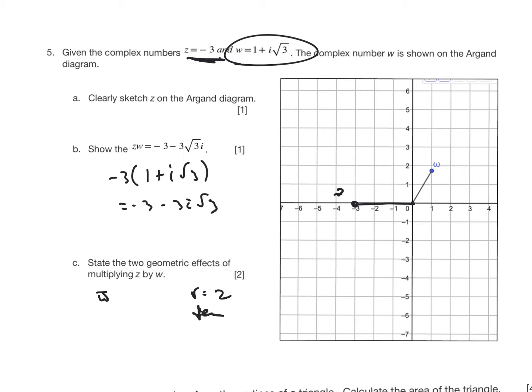And the theta, tangent theta, is root 3 over 1, and so theta is pi by 3, which we know is 60 degrees. And so this is 2 cis pi by 3. If I convert z to modulus argument, I know it's going to be 3 cis. Well, this angle here is pi, and so I end up with cis pi.